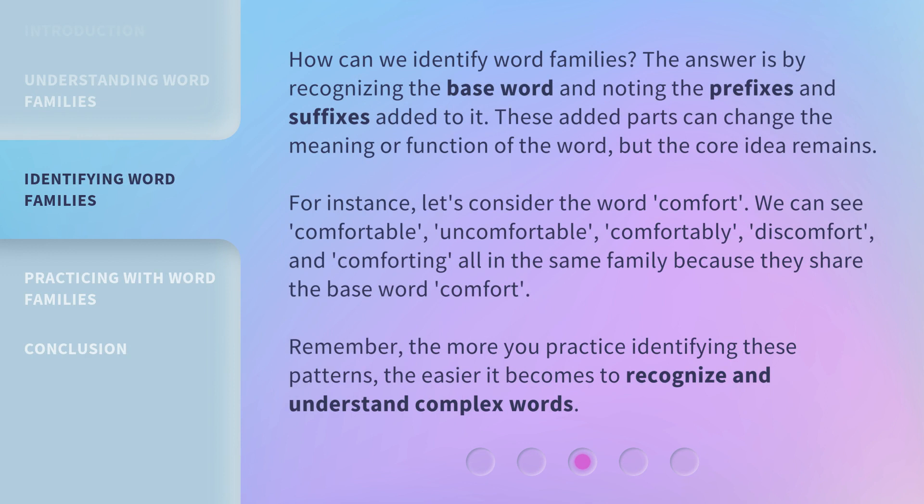How can we identify word families? The answer is by recognizing the base word and noting the prefixes and suffixes added to it. These added parts can change the meaning or function of the word, but the core idea remains. For instance, let's consider the word comfort. We can see comfortable, uncomfortable, comfortably, discomfort, and comforting — all in the same family because they share the base word comfort. Remember, the more you practice identifying these patterns, the easier it becomes to recognize and understand complex words.